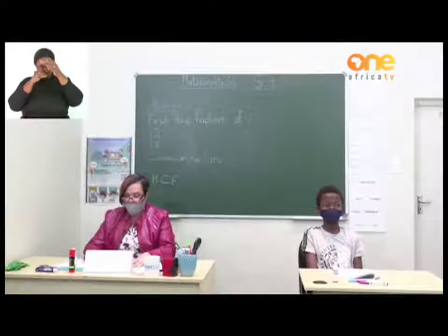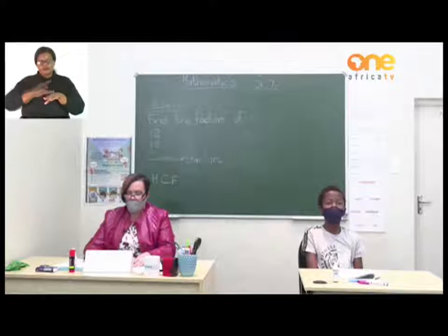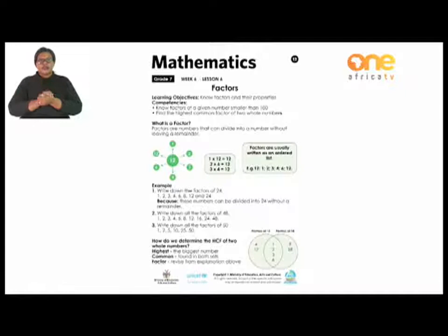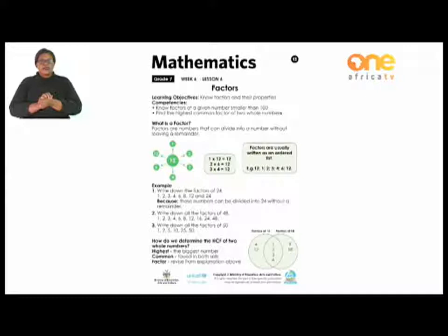The learning objective for today is Factors and Their Properties. Our competencies are: know factors of a given number smaller than 100, and find the highest common factor of two whole numbers. We are busy on page 13. Factors are numbers that can divide into a number without leaving a remainder.